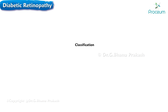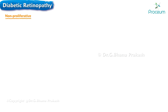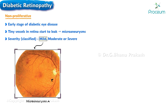Now let's learn about the classification of diabetic retinopathy. Diabetic retinopathy is categorized into two main types: proliferative and non-proliferative diabetic retinopathy. Non-proliferative diabetic retinopathy is the early stage of diabetic eye disease. During this stage, tiny blood vessels in the retina start to leak and form microaneurysms. The severity can vary and is classified as mild, moderate, or severe. In the mild form, only microaneurysms are present.